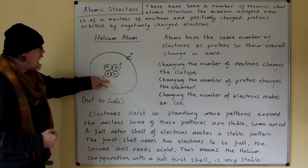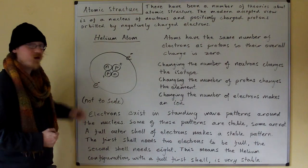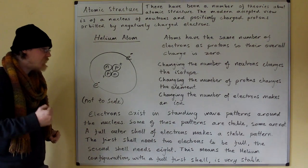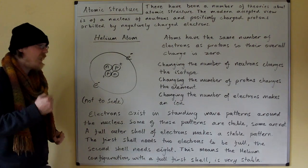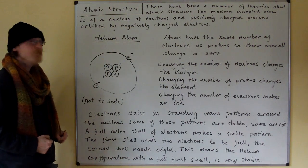Helium has two electrons in its outer shell, so this means the helium configuration with a full first shell is very stable. Thank you very much.